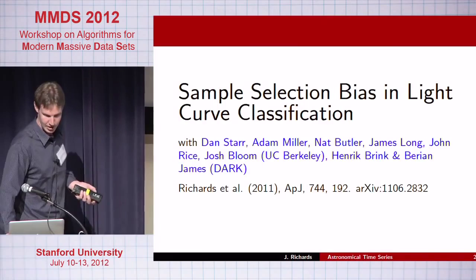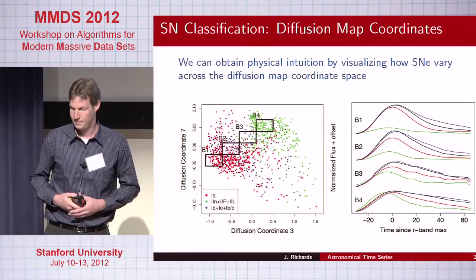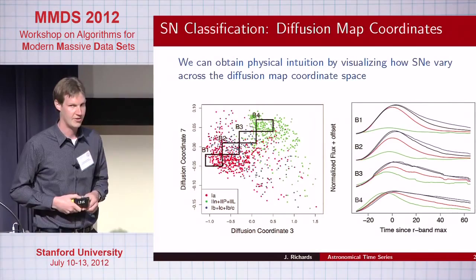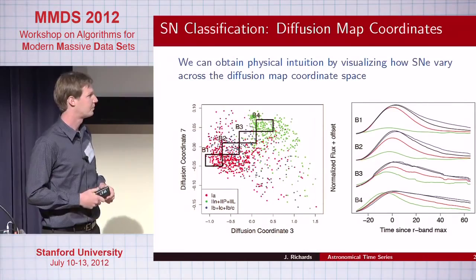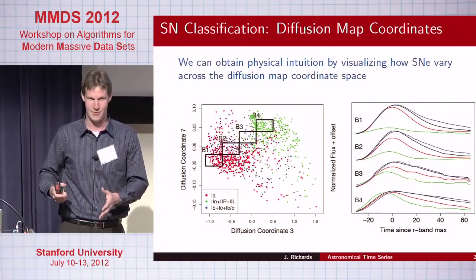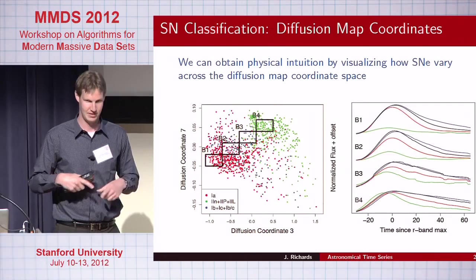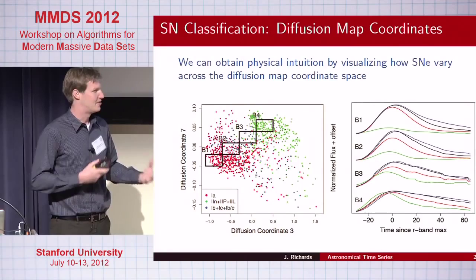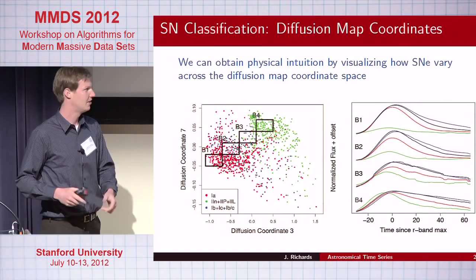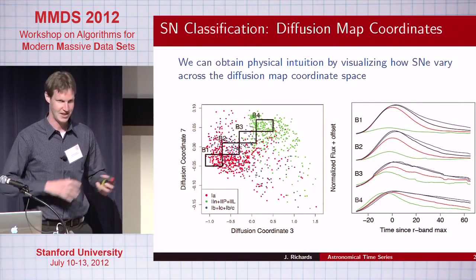Interestingly, this dataset came from a data challenge run by the Dark Energy Survey to compete different classifiers against one another. About half the people used standard nonparametric tools; the other half used physical template fitting — they had physical ideas about what these light curves look like. Even though the data were generated by template dictionaries similar to those used by many teams in fitting, there wasn't a drastic difference between the nonparametric methods and the physical fitting methods, which I thought was pretty interesting.